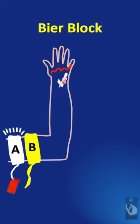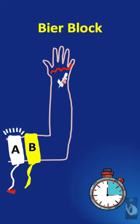Inflate the tourniquet cuff A to 75 mm above systolic pressure. Start a timer and confirm the absence of radial pulse.